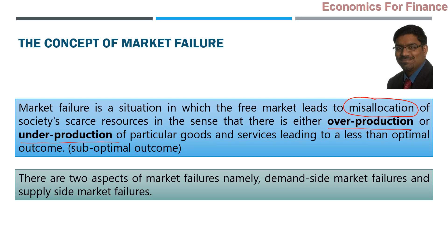Overproduction means supply is more than demand; underproduction means demand is more than supply — the two are not matching. This mismatch happens because the market has misallocated resources. That is the situation in which we can say the market has failed.